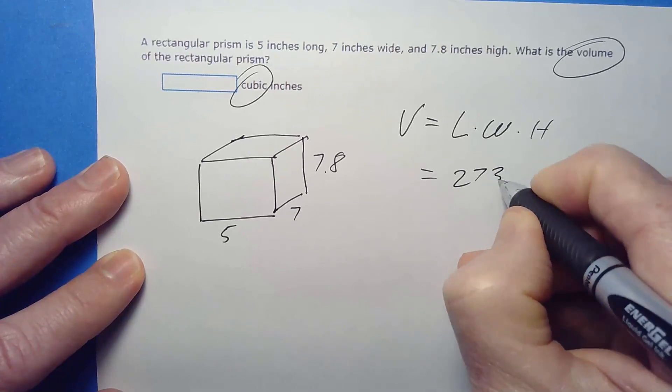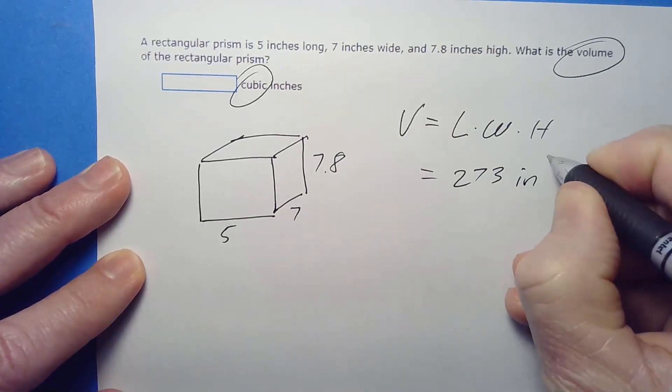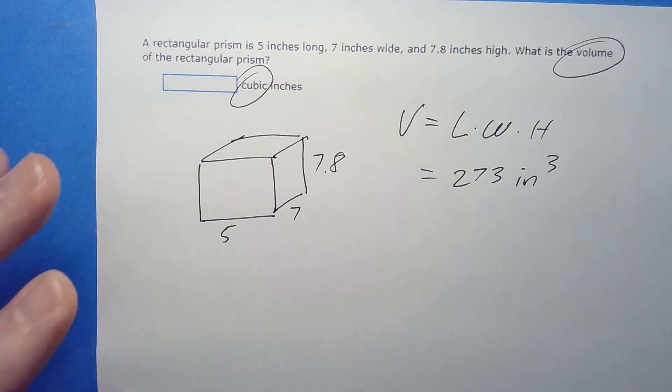And then it almost doesn't matter which number is which. Let's call this 5, 7, and 7.8. And then again, this time it's volume, so it's cubic. Volume is length times width times height, 5 times 7 times 7.8. Pretty quick and easy to do in your calculator, you get 273, inches cubed. All right, that's it for today. Have an awesome one, it's been a great year, and enjoy your summer.